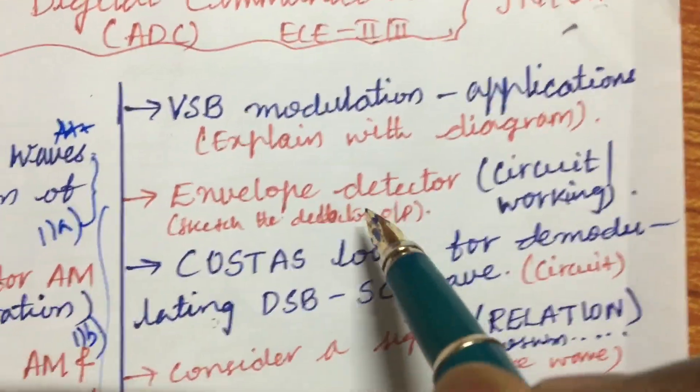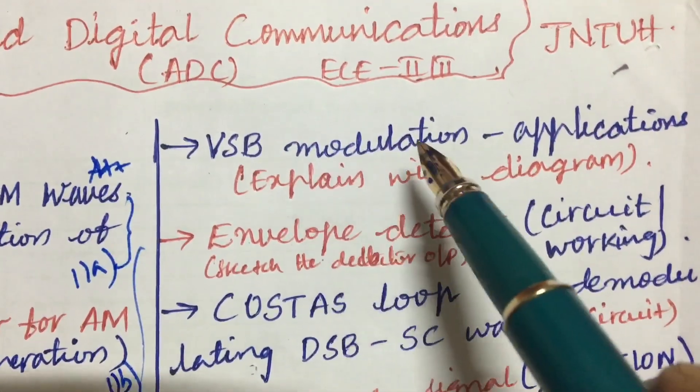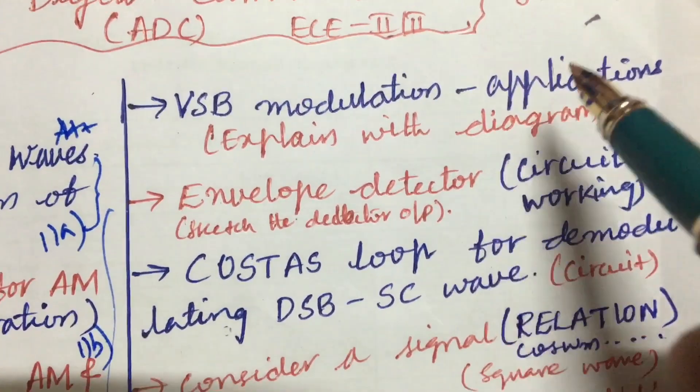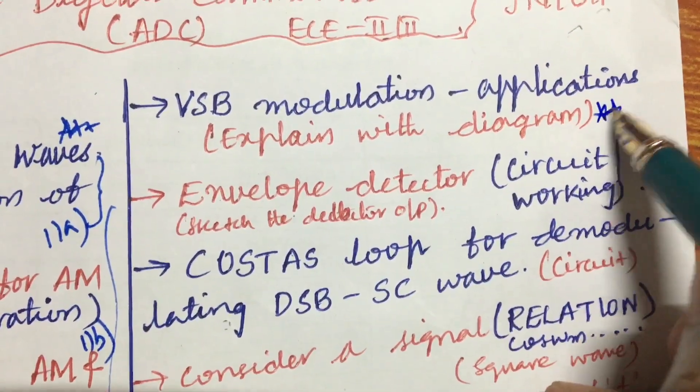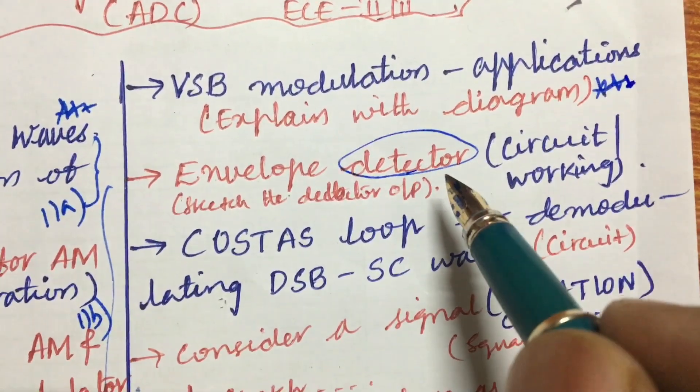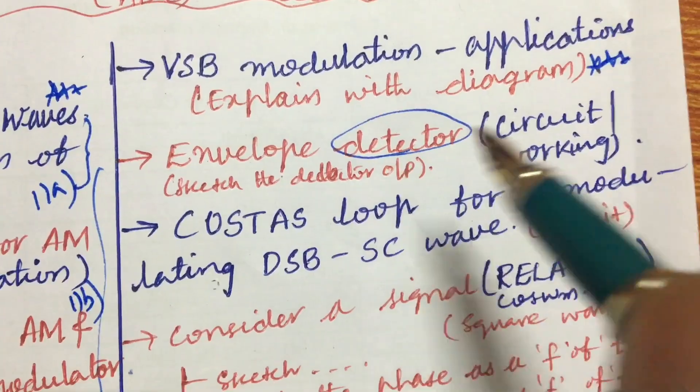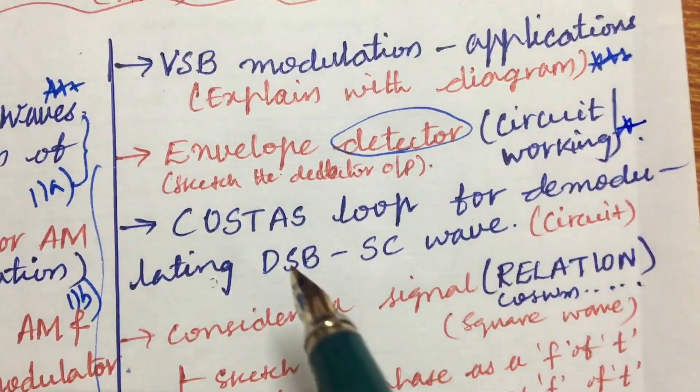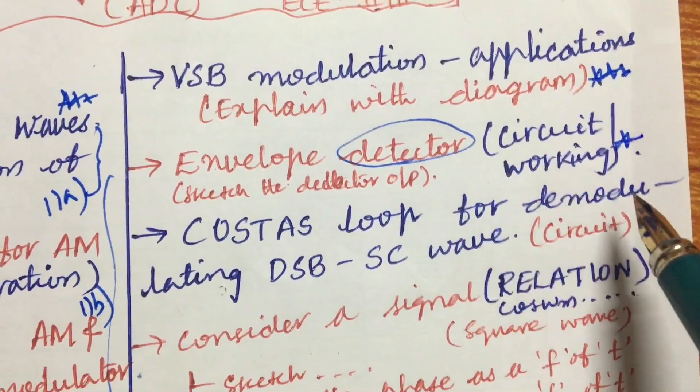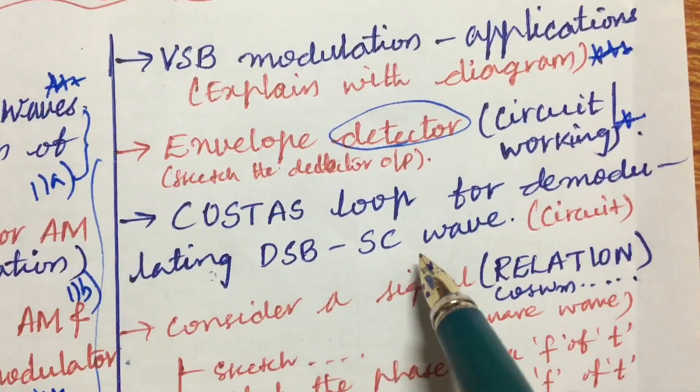Later I am going to work out for you the second question that is all about VSB modulation and its applications. I will explain along with the diagram, it's one of the gunshot questions. Related to the detector you are going to get one question for sure to sketch the detector as well as the envelope detector circuit and the working principle, and COSTAS loop for demodulating DSBSC wave.